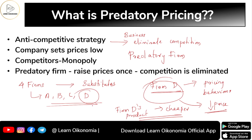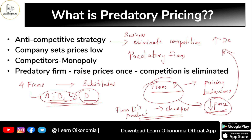Consumers are rational and try to get commodities at cheaper prices because it increases their welfare. So consumers will compare the price of firm D's product with others and find that only firm D's product is offered at a very low price.